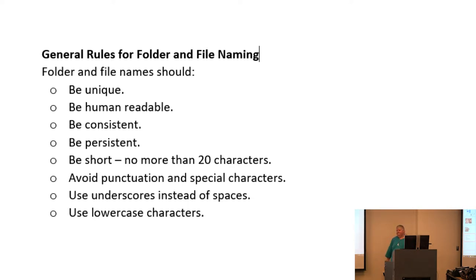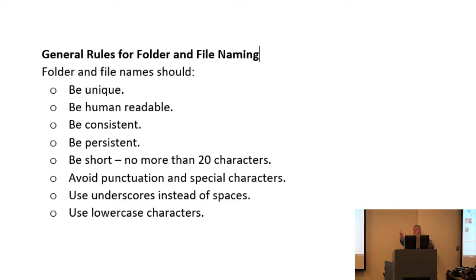What does 'be persistent' mean? In this context, what they mean is don't refer in your file name to something that's going to change. If you work in a library and you're about to change your identifiers or your items, don't put the identifier in the file name, because it's going to change. Then you'll either have to rename all of them, or you'll be constantly referring back to your old structure. An archivist example: collections have box and folder numbers, and when you reprocess a collection, all of those box and folder numbers may change. So if that's in the name of the digital item, you have to change everything.